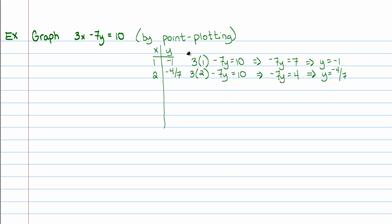If I keep building this table of values, I will always do the same set of operations — subtract 3 times whatever I plug in from both sides, then divide by negative 7. So there's a faster way: if you know you're going to build a table of values, it's much easier to solve this equation right away for a variable. Here I'm going to solve for y.